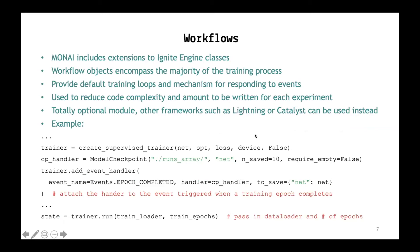Moving forward into workflows: as I said, Ben talked about this yesterday. These are all extensions of the Ignite engine classes. The idea is that they can encompass the majority of your training process. This is really handy — it should help you to get rid of a lot of those big for loops where you're looping across all of your epochs. This should help you to reduce your code complexity and hopefully reduce potential sources of error since you're writing less code. But it's completely optional, and if you prefer to use another framework such as Lightning or Catalyst, you're perfectly free to do that.